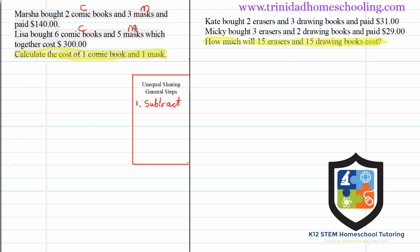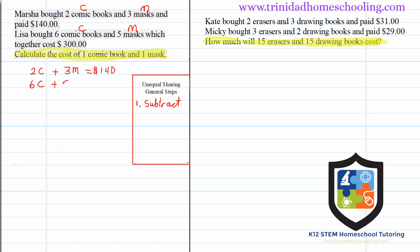So let's write our number statements. For Marsha: two comic books plus three masks equals $140 — we're adding because they paid a total of $140. For Lisa: six comic books plus five masks is equal to $300.